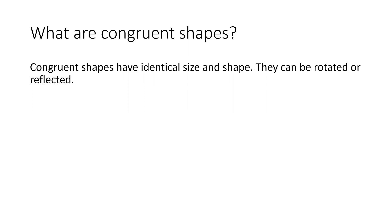So first thing we need to ask is: what are congruent shapes? Congruent shapes have identical size and shape. They can be rotated or reflected — that's fine — but if you had them the same way up they would have to have exactly the same size for every dimension and the same shape. Let's look through some examples and then some non-examples.